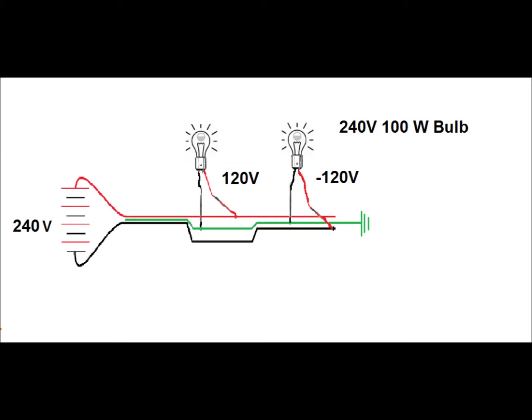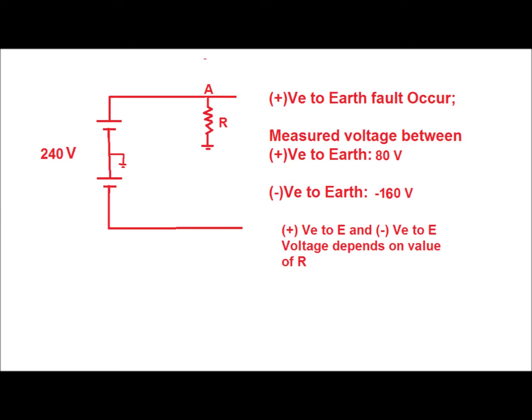The best method is to blow — to use — a 240 volt, 100 watt bulb. Under a healthy system, if you connect a 240 volt 100 watt bulb between positive to earth or between negative to earth, the bulb will not glow. Now suppose a DC earth fault occurs — that is, a positive to earth fault occurs at point A. This earth fault is a resistive earth fault.